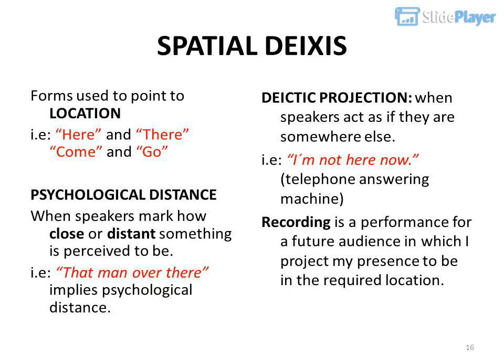Spatial deixis: forms used to point to location, such as 'here' and 'there,' 'come' and 'go.' Psychological distance occurs when speakers mark how close or distant something is perceived to be — for example: 'that man over there' implies psychological distance. Deictic projection occurs when speakers act as if they are somewhere else — for example: 'I'm not here now' on a telephone answering machine.